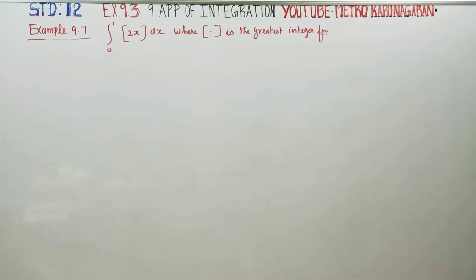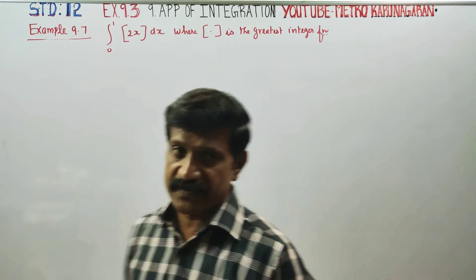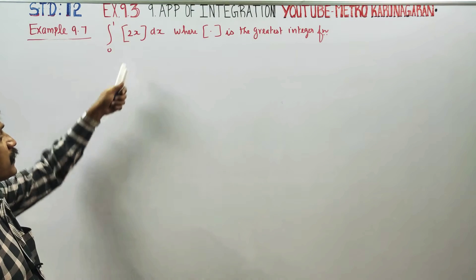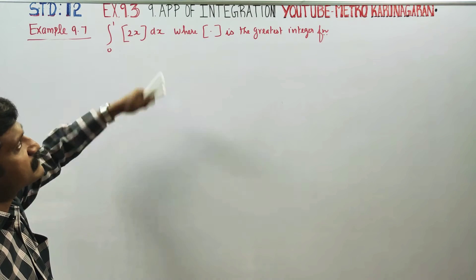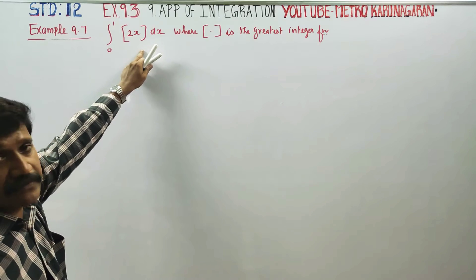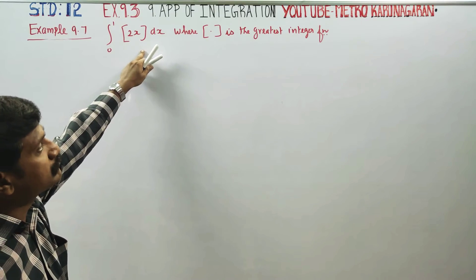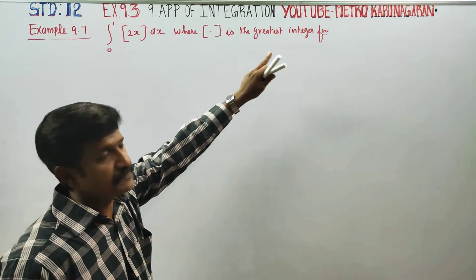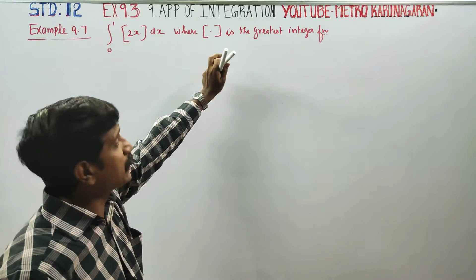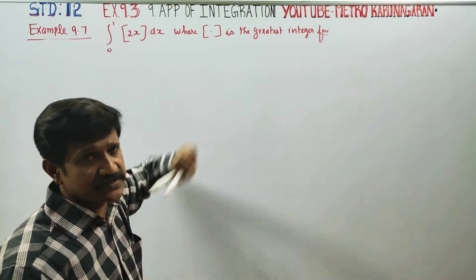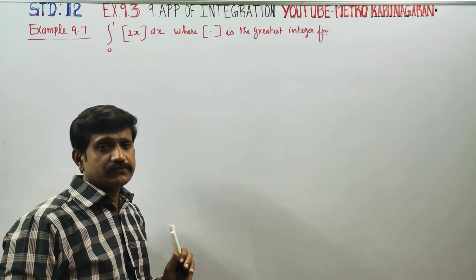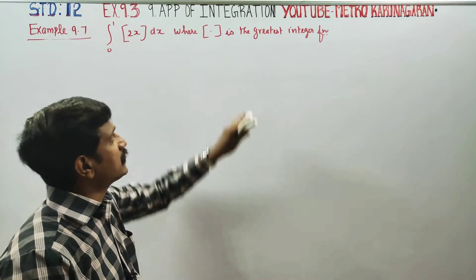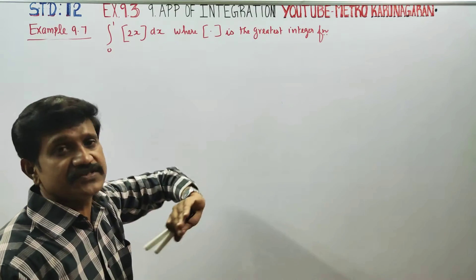Dear 12th standard students, I am Etro Karanagaran. In example 9.7, we are going to integrate the greatest integer function of 2x. In the symbol, we call it the greatest integer function — also called the floor function or the box function. Before doing this integration, you must know the concept of the greatest integer function.